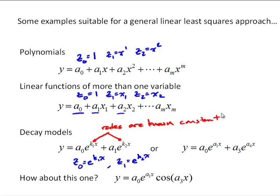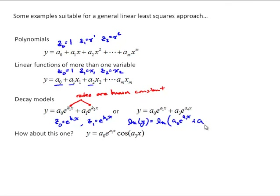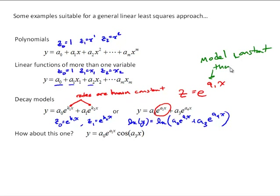If the decay model has four unknown constants — a0, a1, a3, and a4 — we cannot formulate it as a linear least squares approach. You could try taking the natural log to transform it, but natural log of y equal to natural log of (a0*e^(a1*x) + a3*e^(a4*x)) doesn't simplify further. The problem is we cannot have a basis function z equal to e^(a1*x) where a1 is one of the model constants we are seeking with the curve fit.